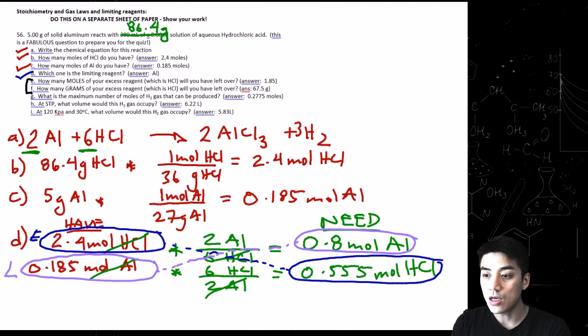Letter E and F, you can answer together. So let's do E first. So how many moles of your excess reagent, which is HCl, it's given to you, will be left over? So simply go 2.4 minus 0.55, because you have 2.4 moles of HCl, but you're only going to need 0.55 of it. And then when you subtract those numbers, you get 1.85 moles of HCl. So that's how much is left over.